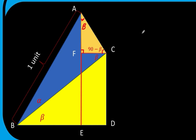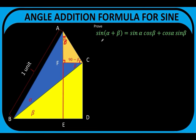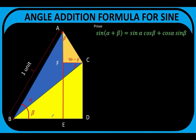What we would like to prove is that the sine of the sum of alpha and beta is equal to sine alpha cosine beta plus cosine alpha sine beta. Based on our figure, alpha plus beta is this combined angle, so we are looking at triangle ABE. In this right triangle ABE, the sine of alpha plus beta is equal to the opposite side AE over the hypotenuse, which has a measure of one unit. Therefore, the sine of alpha plus beta is equal to the length of segment AE.